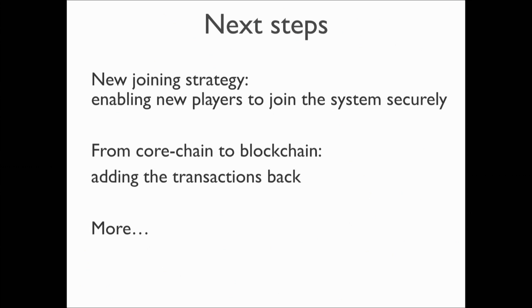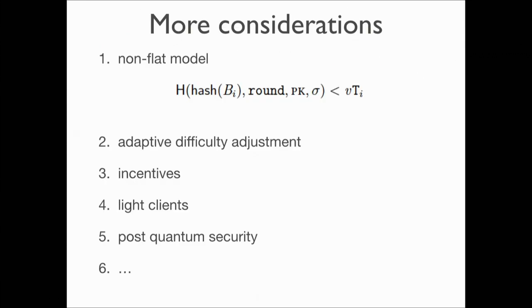There are more steps: for example, how new players can join the system — we have a new strategy to ensure that. Also, we removed transactions from the block, but now we can use a digital signature to add transactions to the blockchain easily. The main point is the design is really close to Bitcoin's design. That means many fancy results about Bitcoin — like the variable difficulty model, difficulty adjustment, and incentive structures — may be easily moved to our system. We can also do post-quantum security with some modifications.